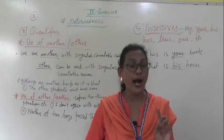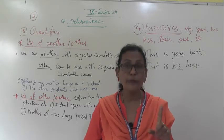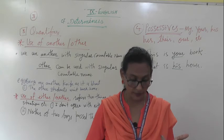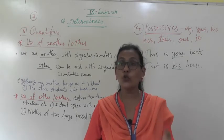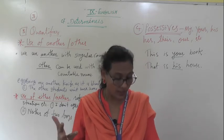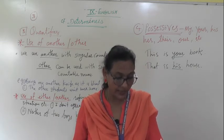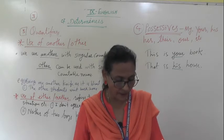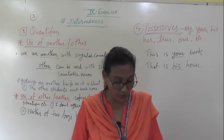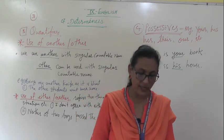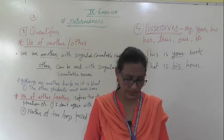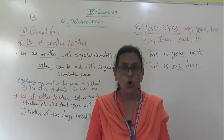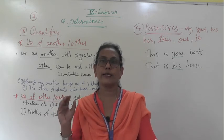We use different possessive determiners depending on who owns something. Subject 'I' → my; 'we' → our; 'you' → your; 'they' → their; 'he' → his; 'she' → her; 'it' → its. My, his, her, and its are used with singular nouns, while our and their are used with plural nouns. Your can be used with either singular or plural nouns depending on the sense of the sentence.